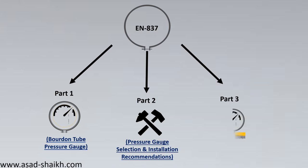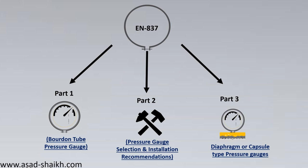EN 837 Part 3 deals with special types of pressure gauges — specifically diaphragm and capsule type pressure gauges. Here, diaphragm refers to the pressure sensing element within the gauge itself, not a diaphragm seal. Diaphragm and capsule type pressure gauges are generally used for low pressure applications. I hope you found this video valuable.